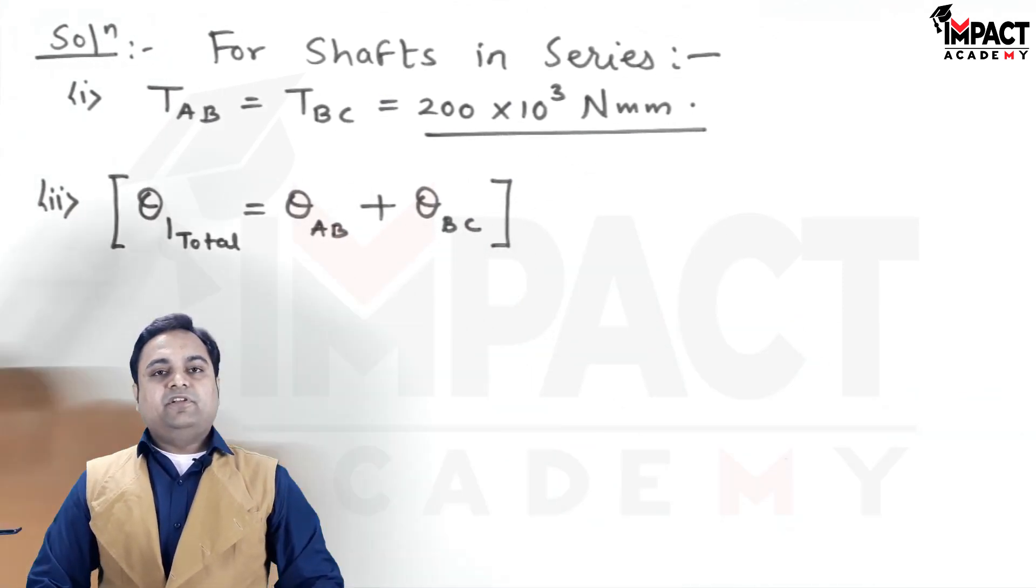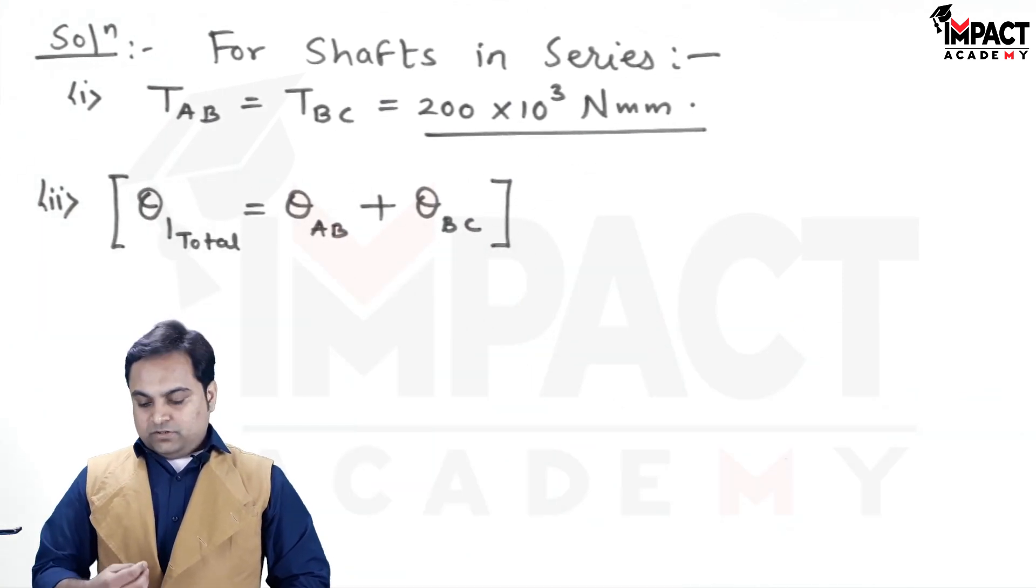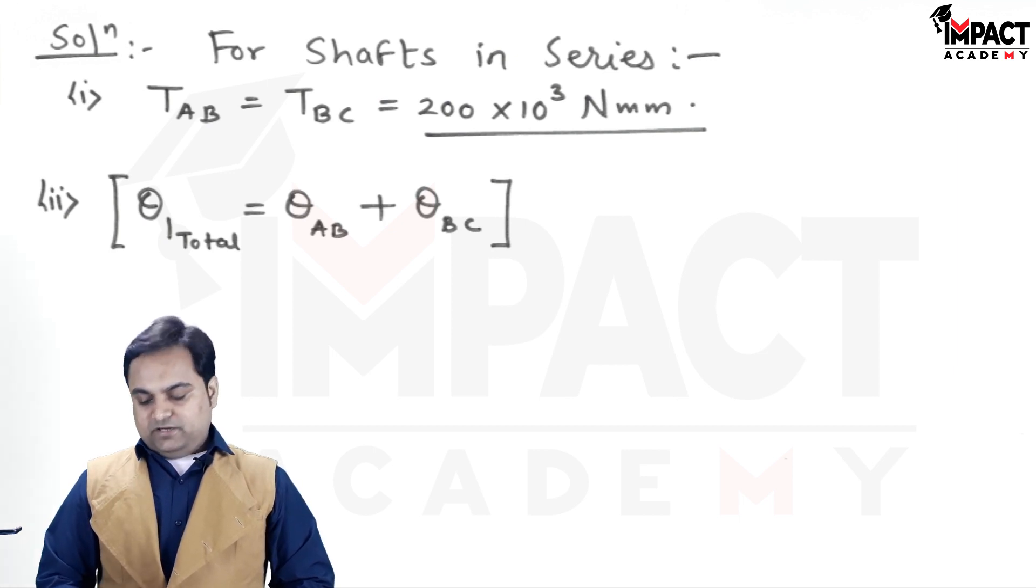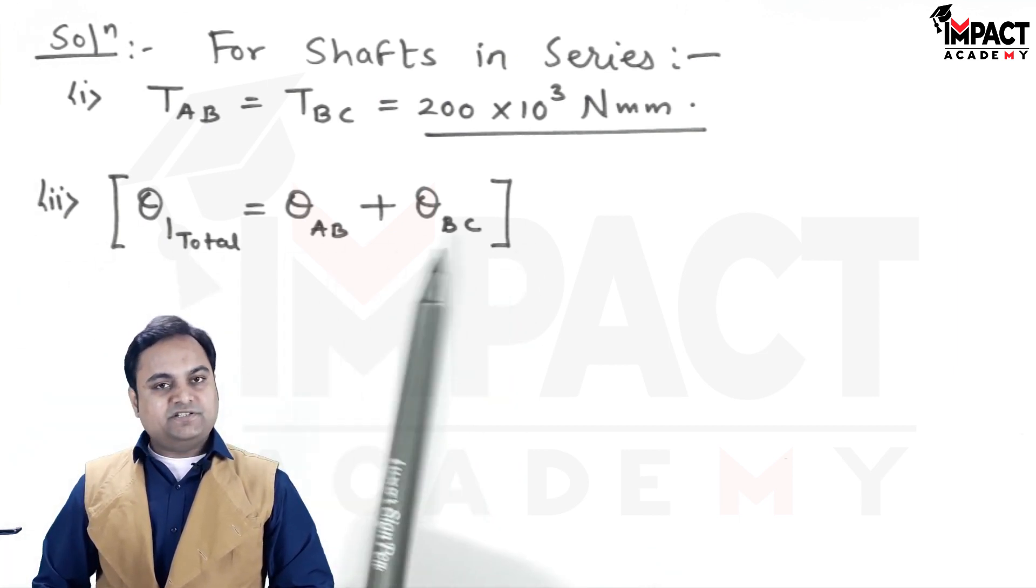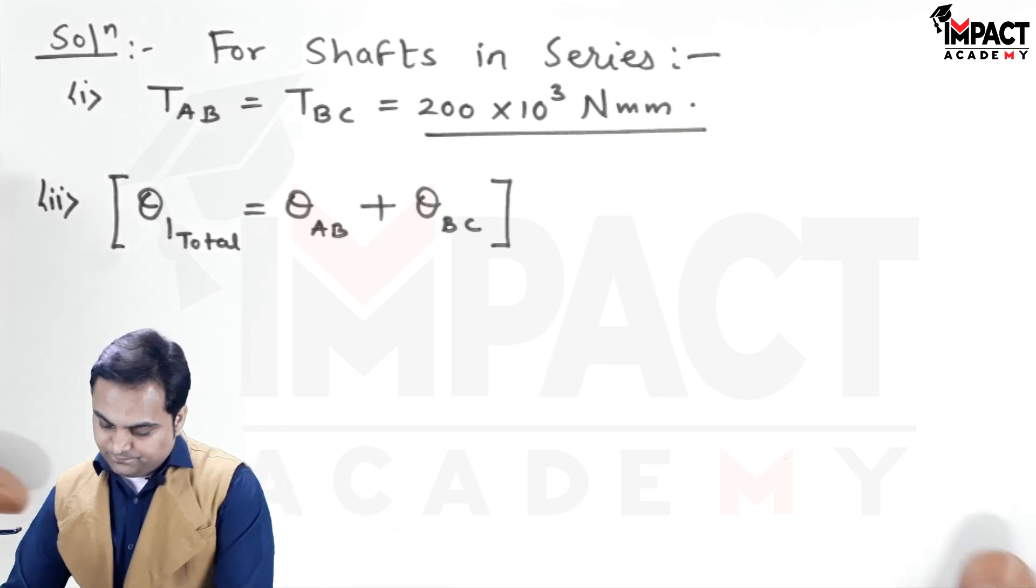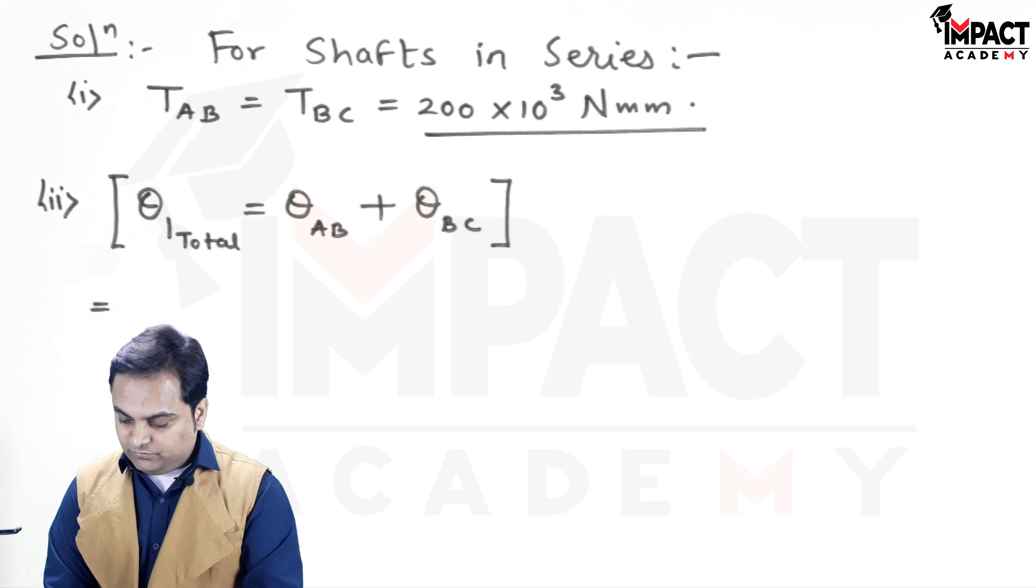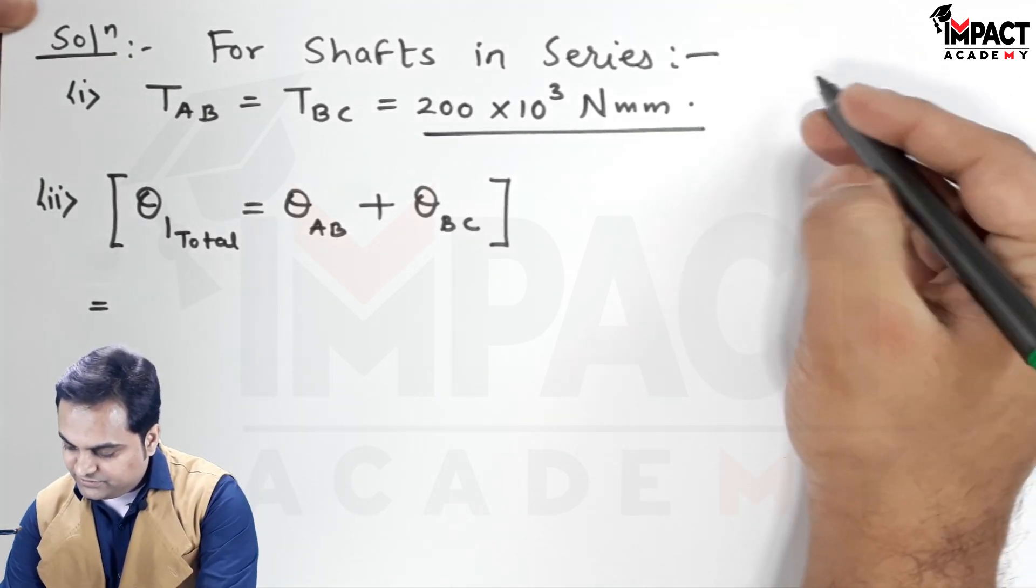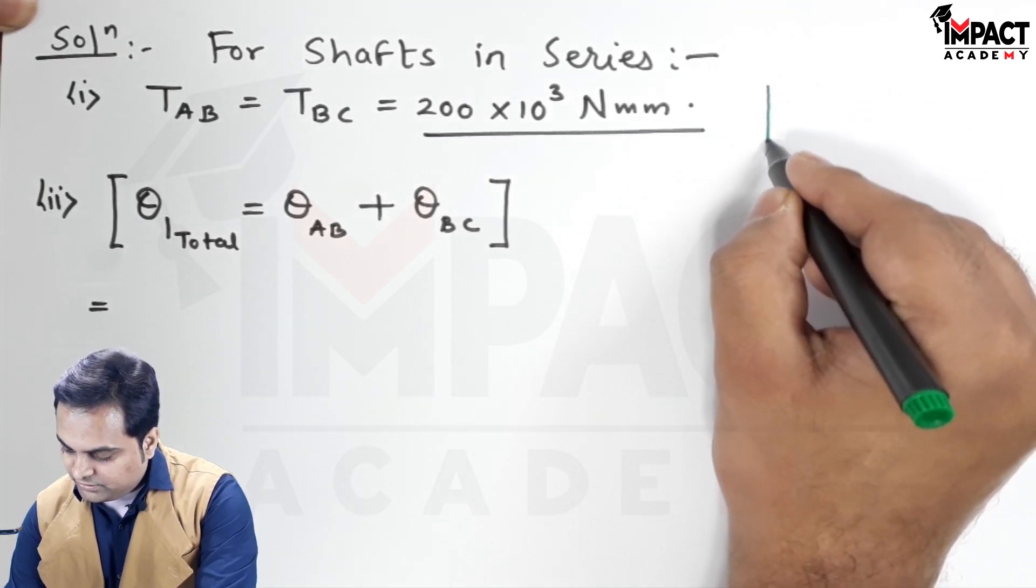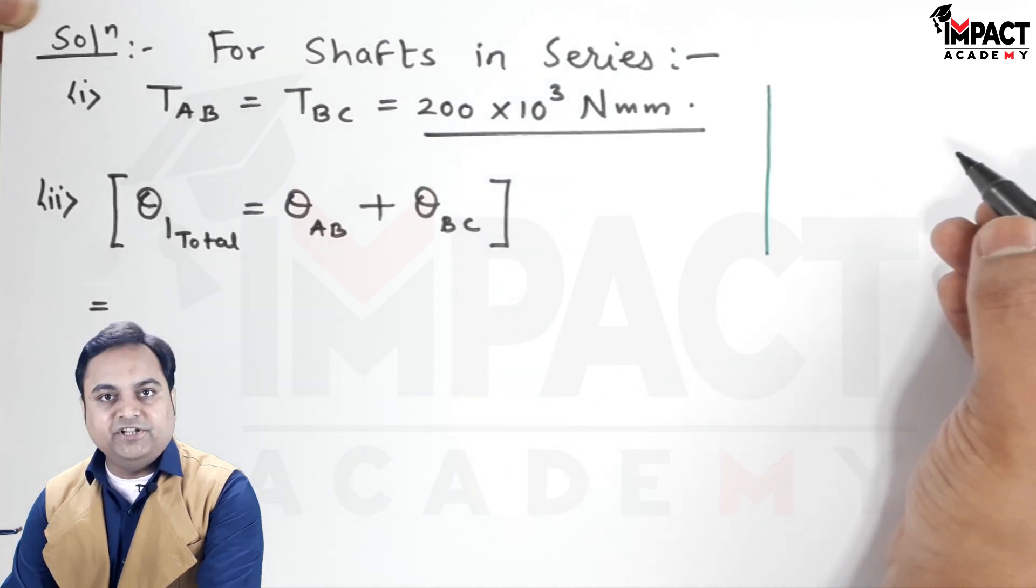Remember, whenever we have shafts in series, the amount of torque remains constant throughout, whereas the angles of twist get added. From the torsional equation and rigidity criteria: